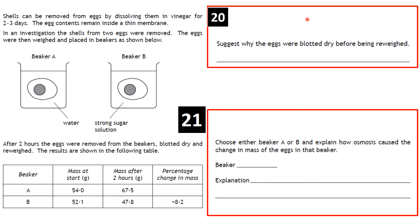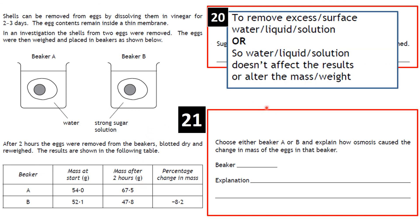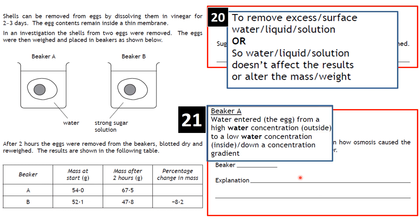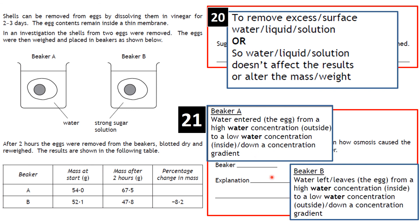Question on eggs in beakers: explain why eggs were blotted dry before re-weighing. This removes excess surface water/liquid so it doesn't affect the mass results. For osmosis explanation — if beaker A: water entered the egg, moving from a higher water concentration to a lower water concentration. If beaker B: water left the egg, moving from a higher to a lower water concentration.